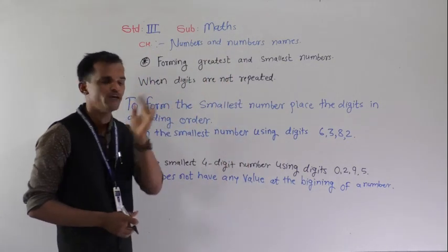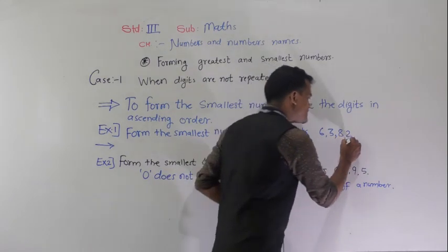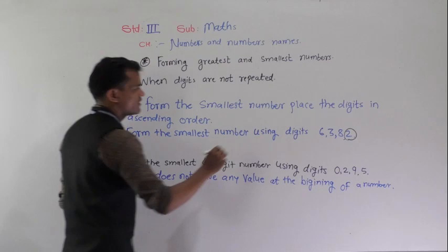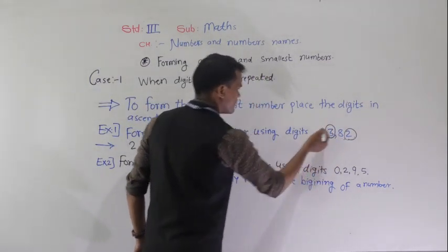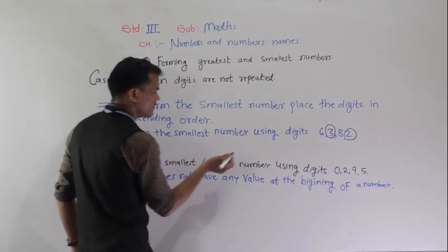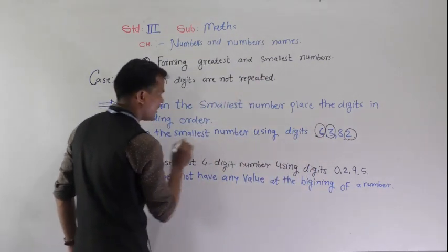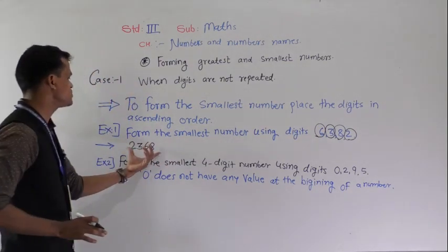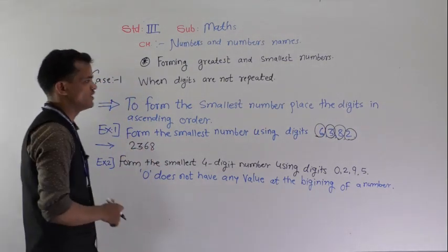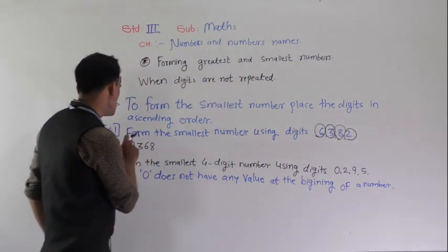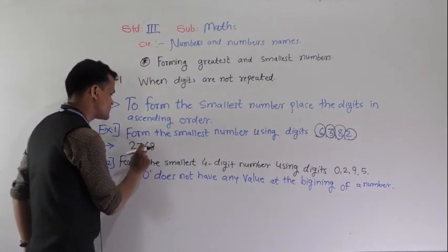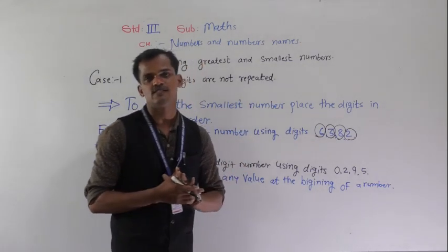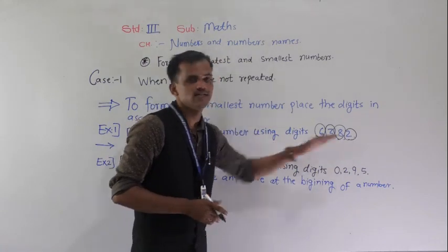Ascending order means small to big order. Which is the smallest digit here? 2. So place 2 at the first position, then bigger than 2 — which number is here? 3, then 6, and at last 8. This number 2,368 is the smallest number formed by using these digits.